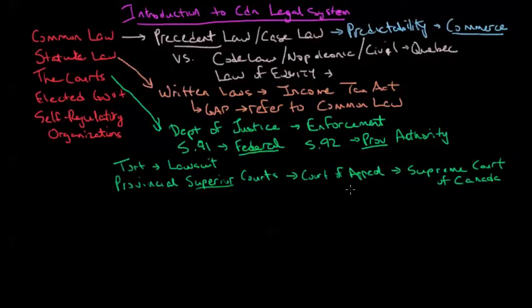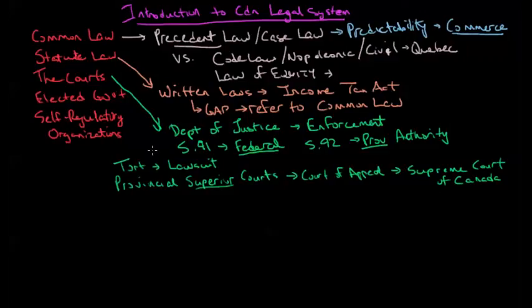The Supreme Court will typically see somewhere between 50 to 75 — definitely less than 100 — cases that arise from provincial superior courts originally in a year. They're generally going to choose cases that are of national interest or cases where there's some key question the Supreme Court feels is important. They're not just going to choose cases on the basis of an amount of money at stake.